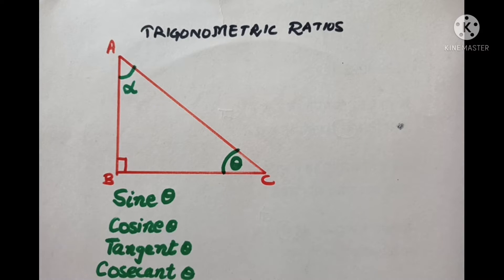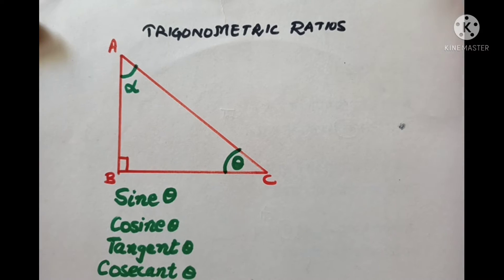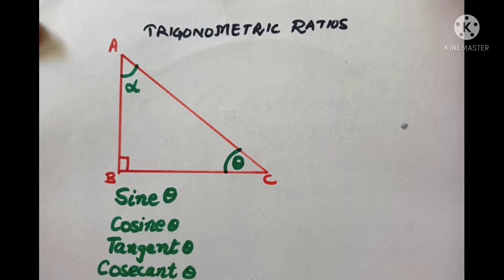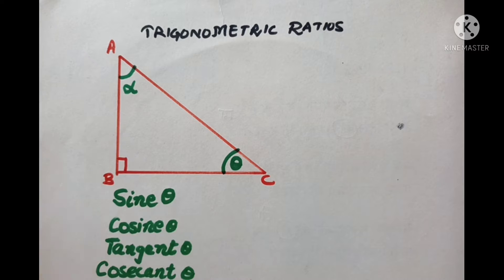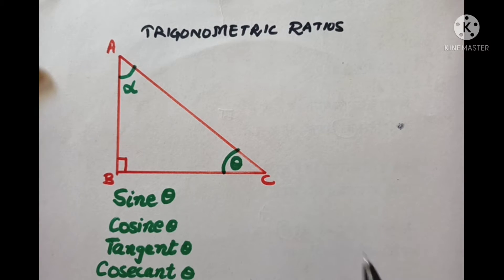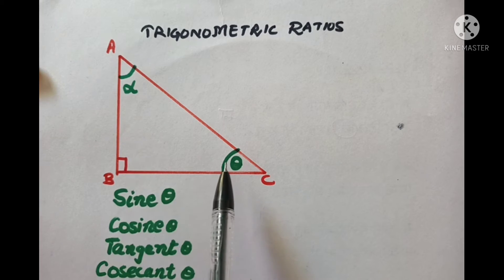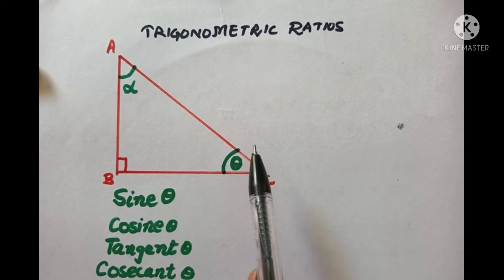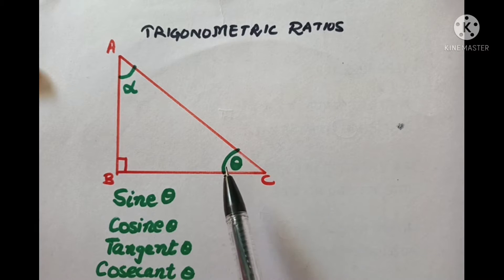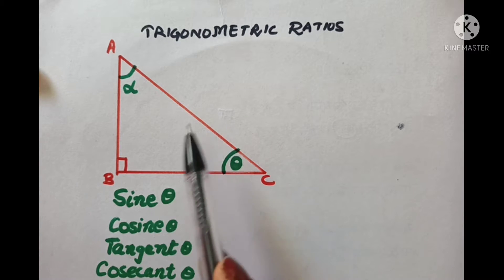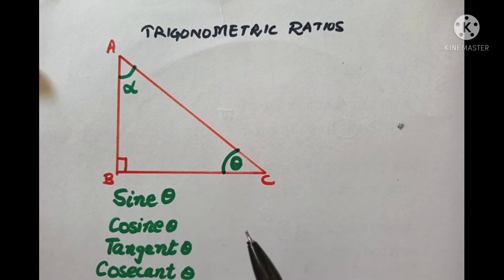Hello students, today we are going to learn about the basics of trigonometric ratios, their formulae and three methods to remember the formula. It's going to be very interesting. Let's first understand that in a right-angled triangle, trigonometric ratios are those which give us the relationship between an angle and the sides of the triangle.